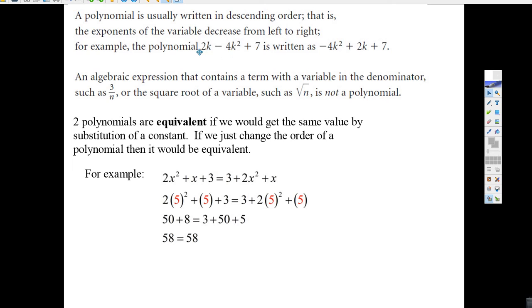It's usually written in descending order. If you've got a polynomial like that, these two are really the same polynomial. They're equivalent. But we put the leading exponent first, minus 4k squared plus 2k plus 7. That's how you're supposed to write it.